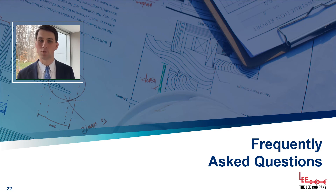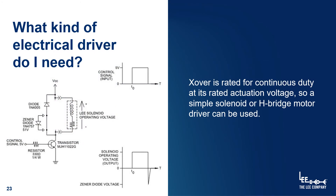Next we'll cover some frequently asked questions about Crossover. By far the most common question we receive is what electrical driver to use. Thankfully Crossover is agnostic to the type of actuation technology you use for its solenoid coil. The valve is rated for continuous duty, meaning you can actuate it and hold it open for an indefinite period of time at the actuation voltage and current. The coil will get warm but this won't damage the valve as long as it's being operated within the ambient temperature range. You could use a basic transistor circuit, a relay, or an H-bridge motor driver chip to actuate the coil.